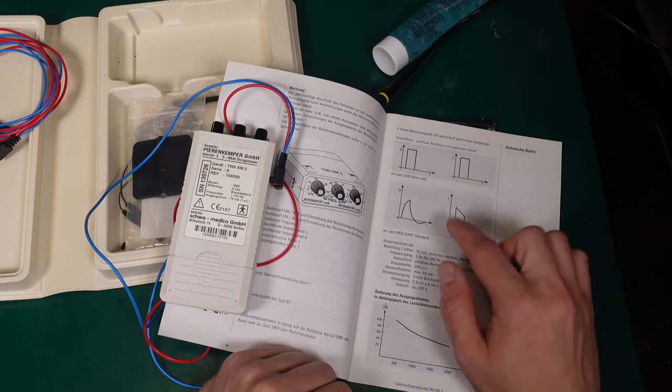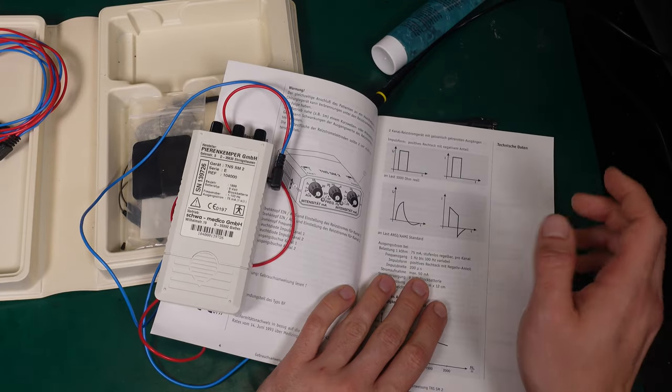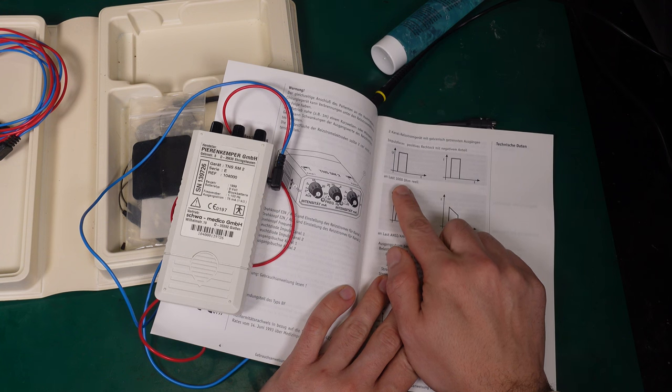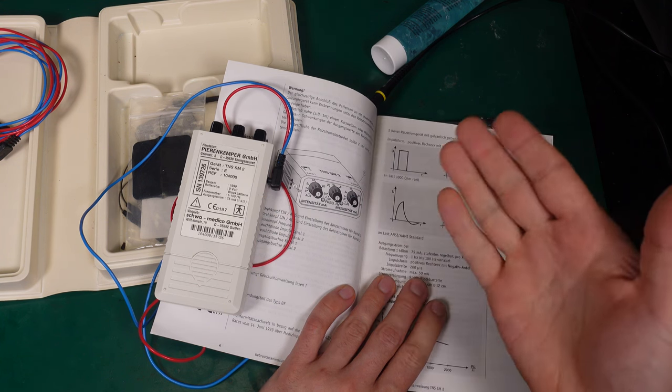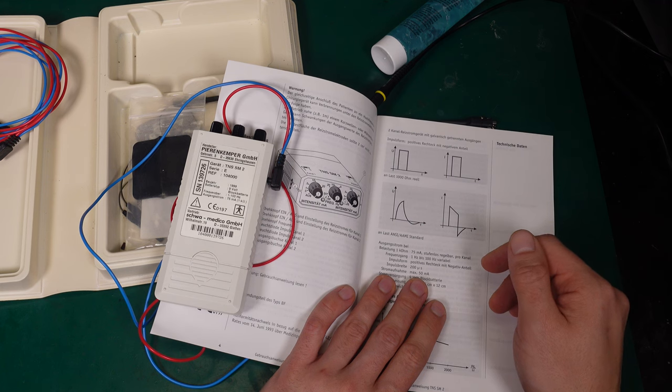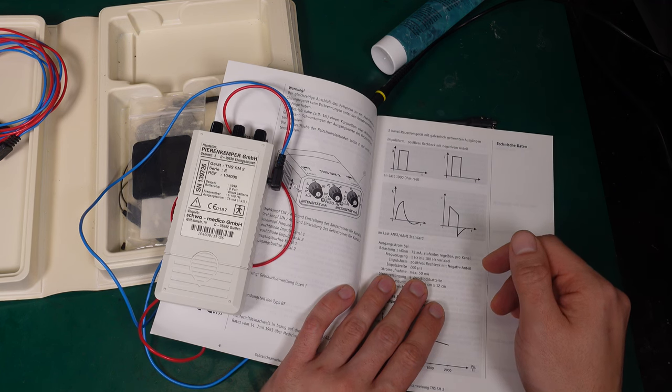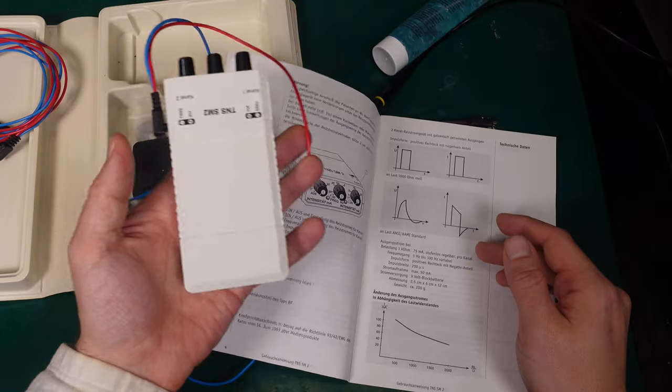As you were able to see, we are pretty close to the user manual. They are stating it is for a one kilo-ohm load. We are only loading this by my oscilloscope impedance, but we're pretty close.